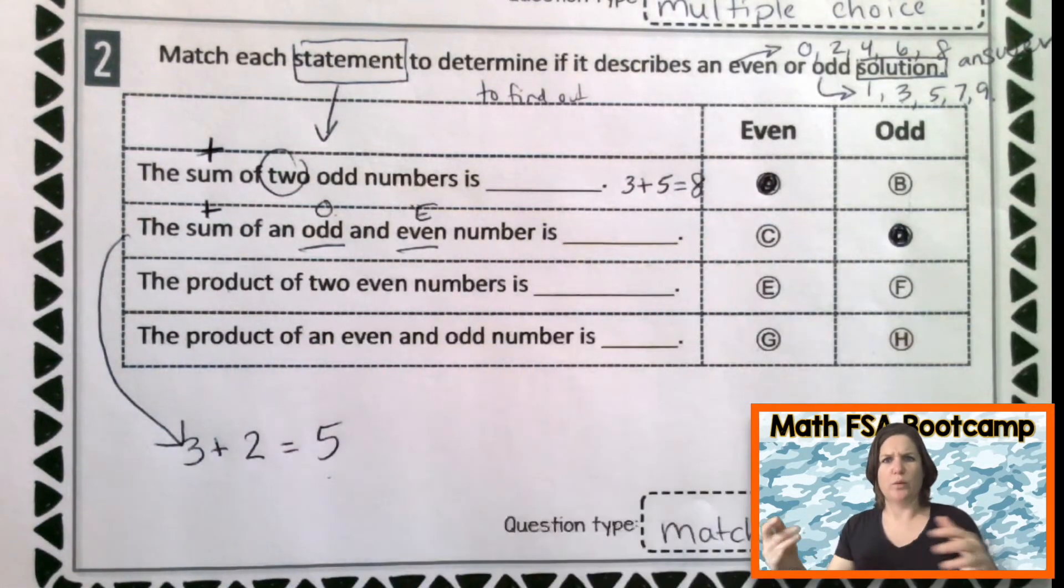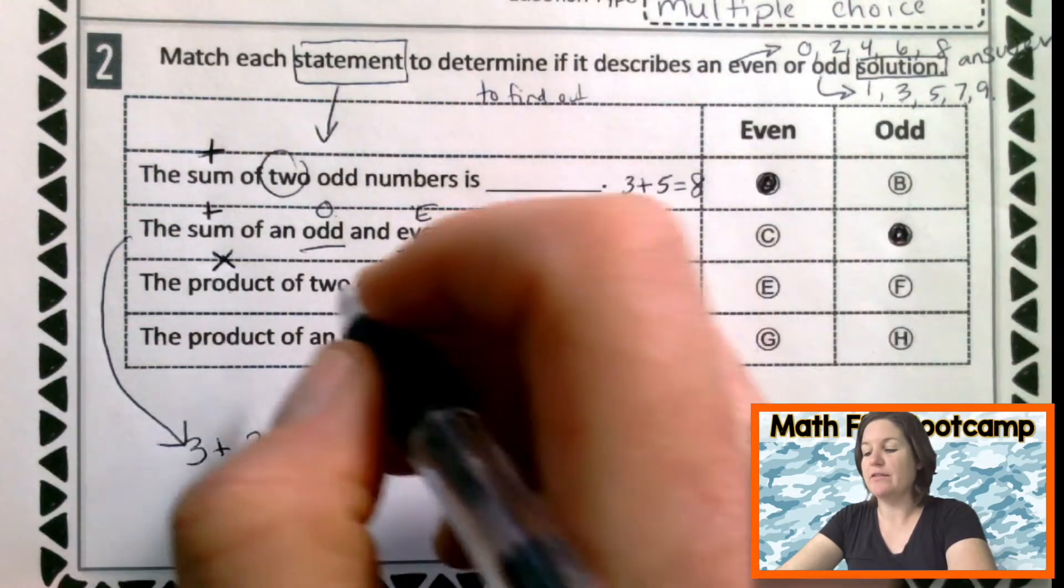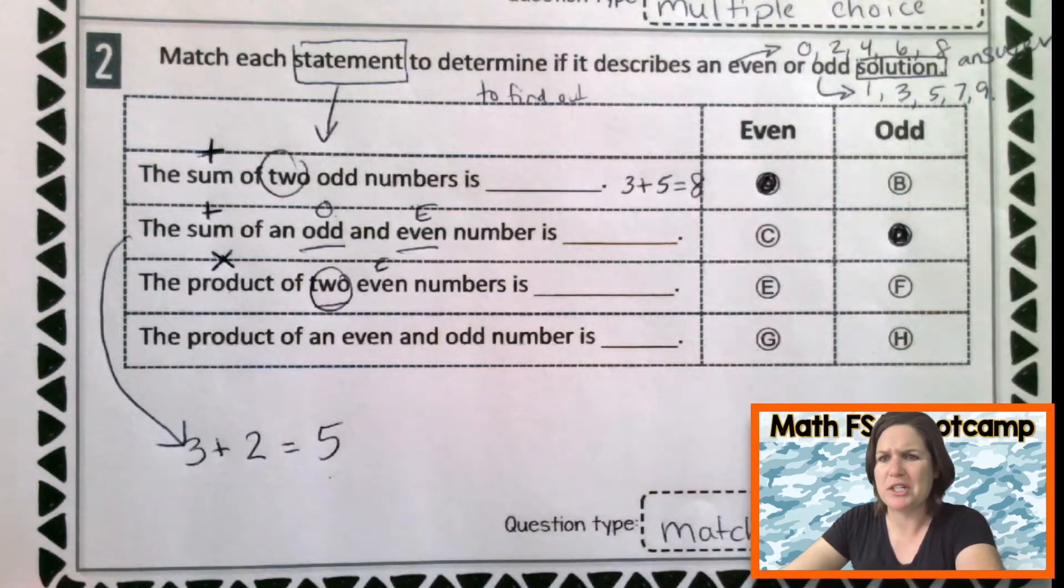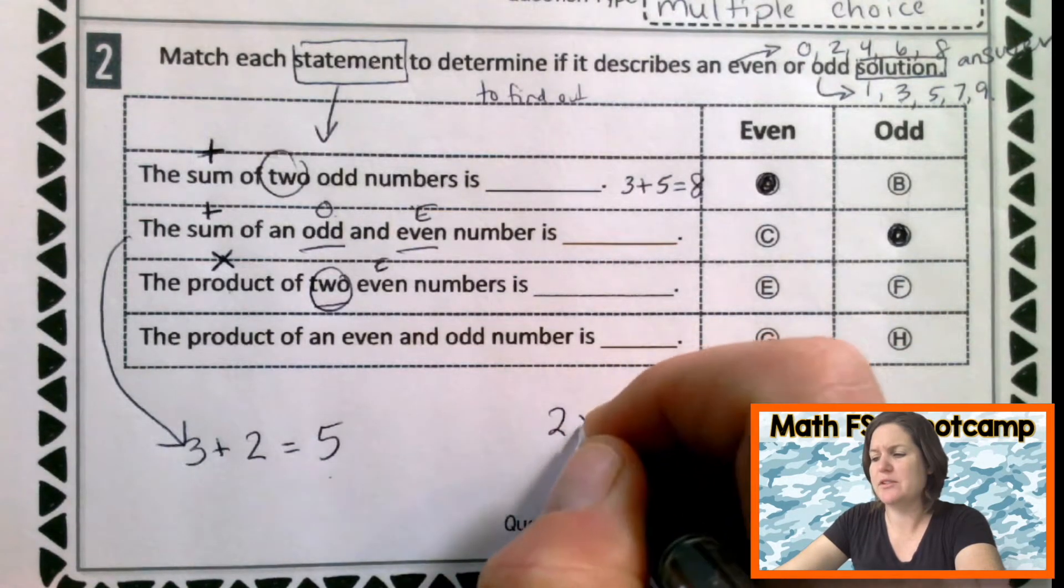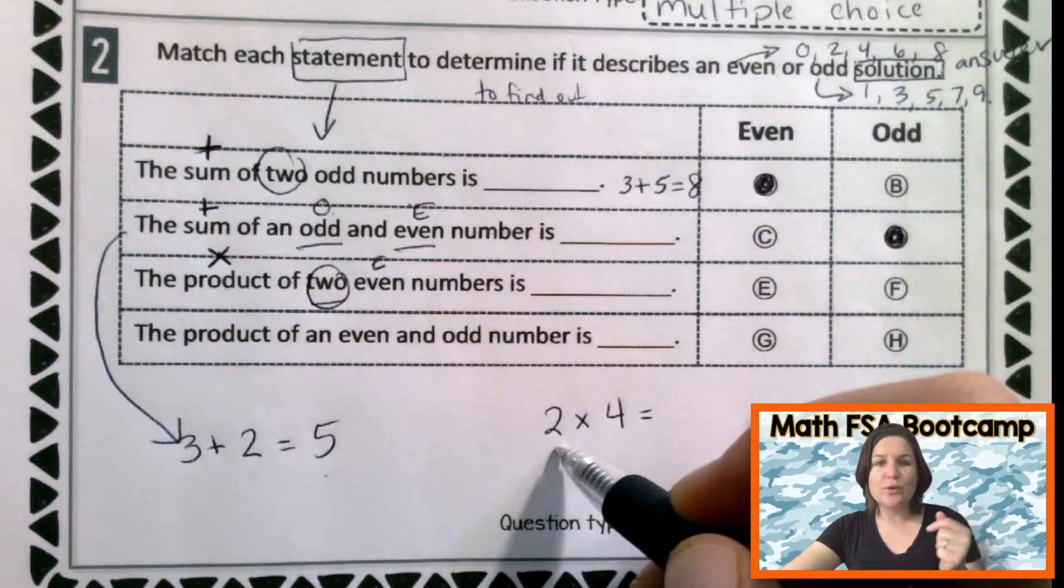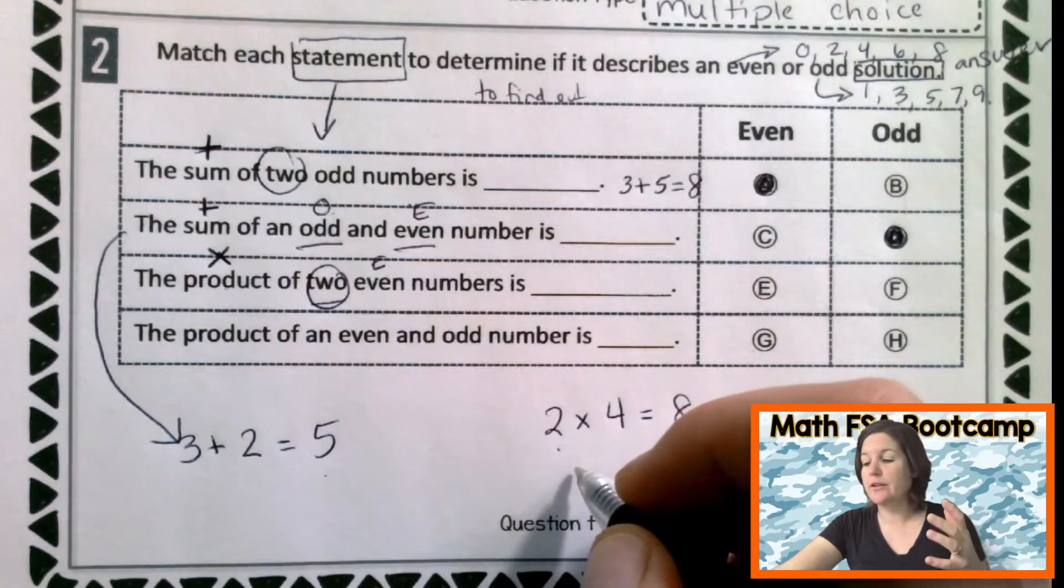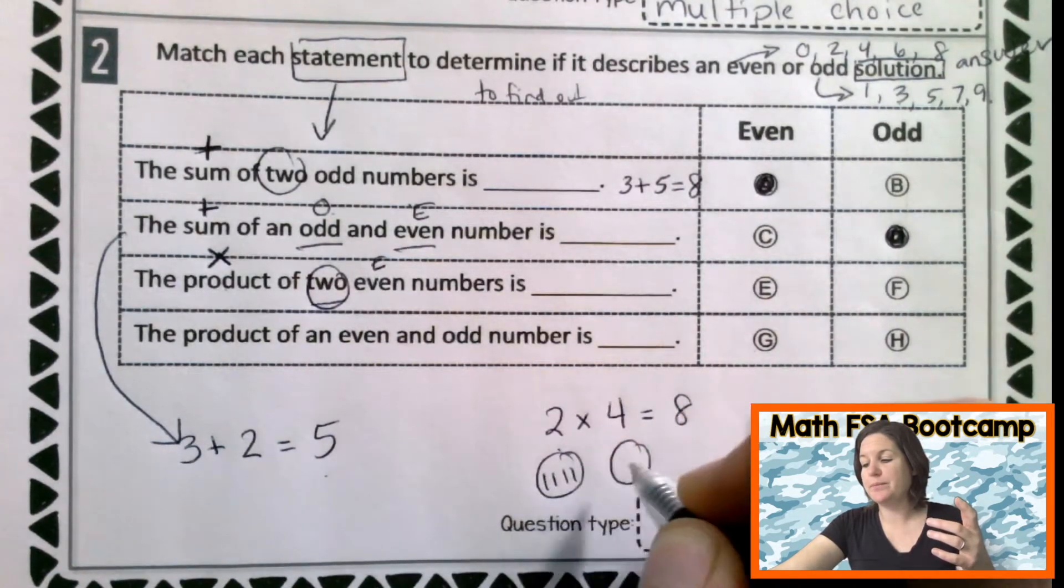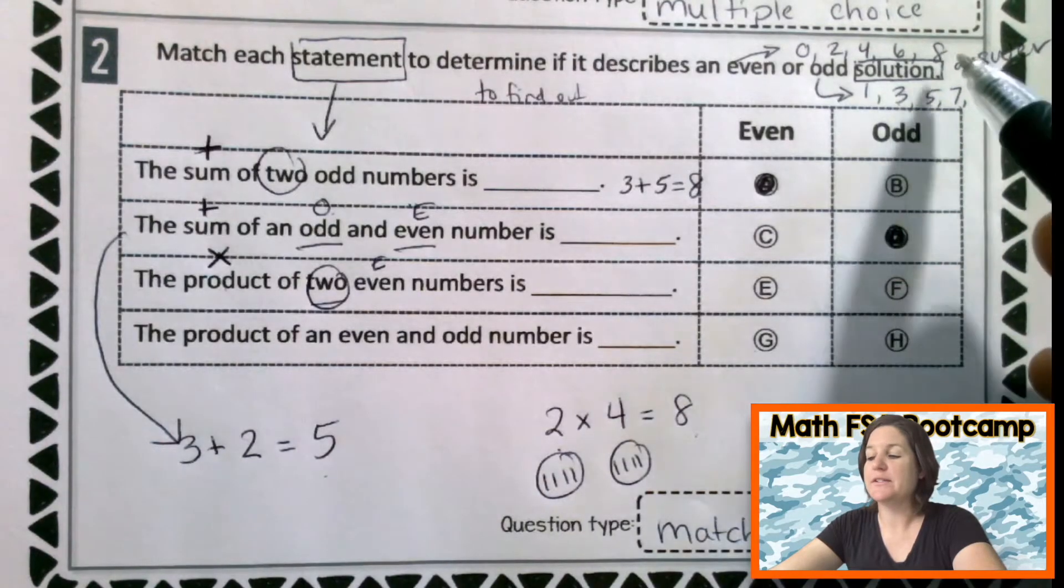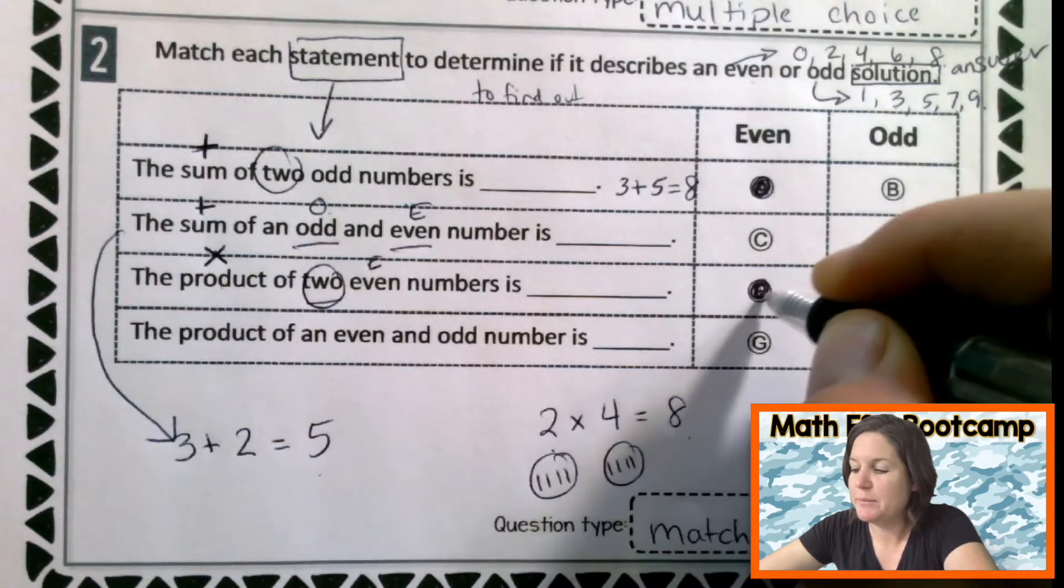All right. Next row. The product. What does product mean that we need to do? Multiply. The product of two even numbers. Two even numbers. So let me get two even numbers. Don't make this hard on yourself. Let's do 2 times 4. Okay. 2 times 4 would be. Do you know I know my twos? 2, 4, 6, 8. Eight. Or two groups with 4 in each would give us 8. And 8. Is that odd or even? It is even. So which one are we going to mark? E or F? E. Because it's even.